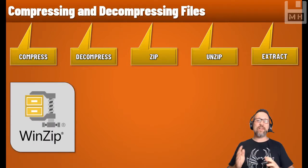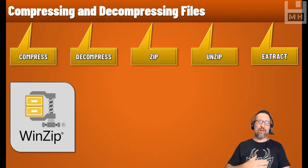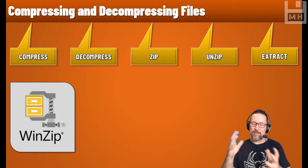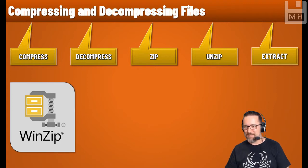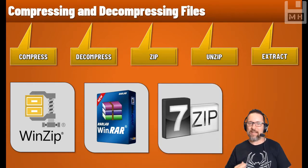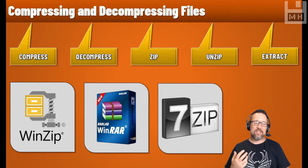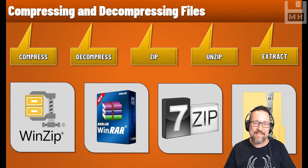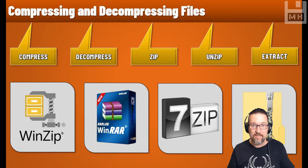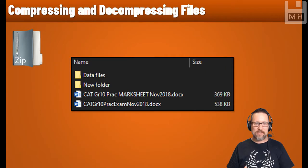You may have heard of WinZip — it was the industry standard for zipping and unzipping files. WinRAR is another program that compresses files. 7-Zip is another one. And of course the standard built-in compression technology in Windows 10 is basic zipping — called zip — and it has its own icon in Windows 10.